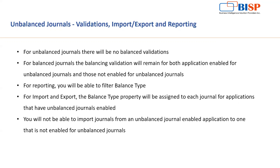For reporting purposes, you can filter by balance type to identify which are balanced entries and which are unbalanced entries. For import and export, the balance type property will be assigned to each journal in the application. When unbalanced journal is enabled, you will not be able to import journals from an unbalanced-journal-enabled application to any application where the feature is not enabled — that is something to be aware of.